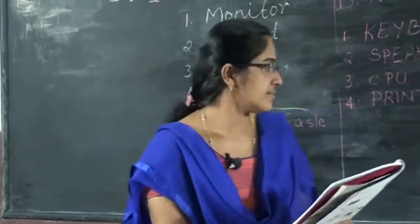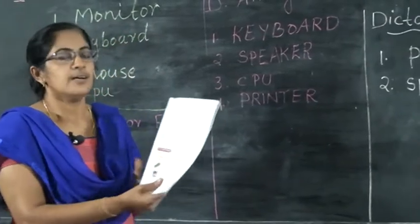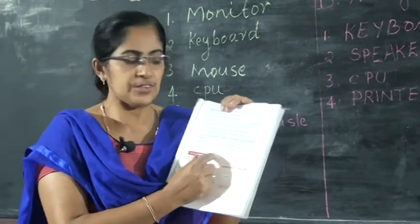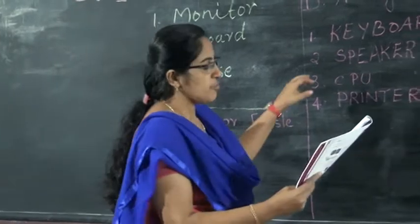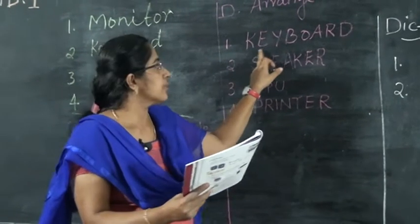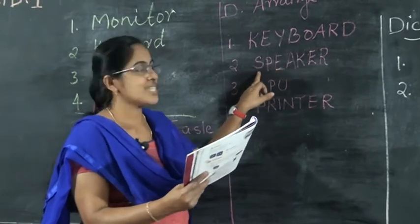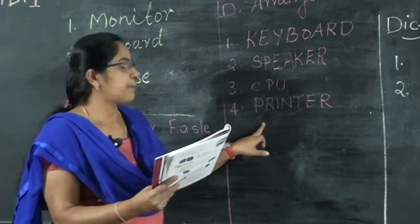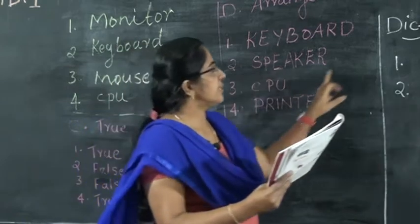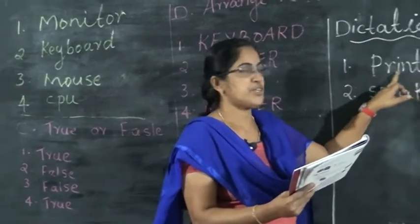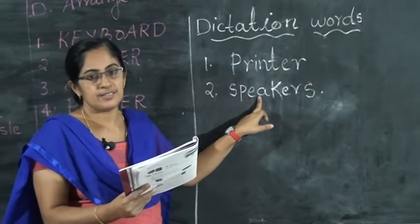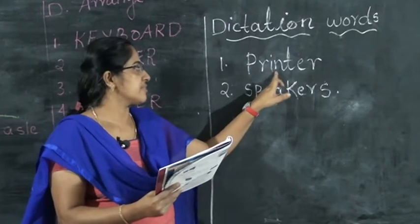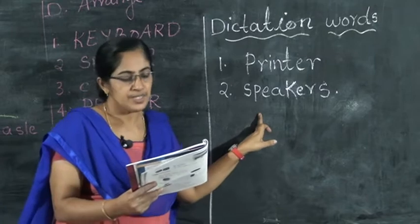Next activity: arrange the letters — rearrange the letters to make spellings. The words are computer parts and devices. The spellings include printer and speakers.